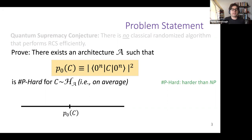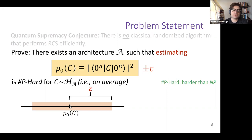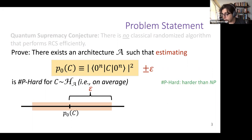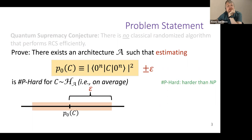It turns out that this one probability amplitude is not sufficient to prove the quantum supremacy conjecture. You have to prove that this point and some epsilon neighborhood of it are hard, where epsilon is a very particular number. There is some specific neighborhood of P₀(C) where everything in this region is #P-hard when the gates of the quantum computer are random. So it's just this one amplitude—proving it's hard is enough to prove the approximate sampling hardness of the entire thing.